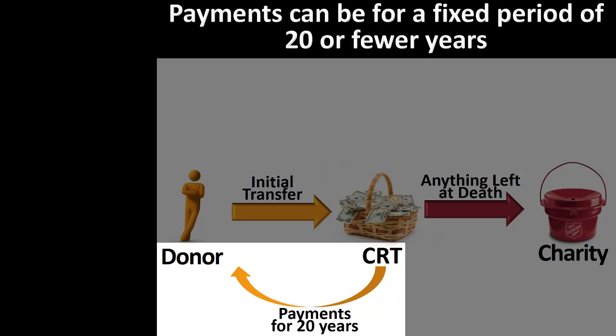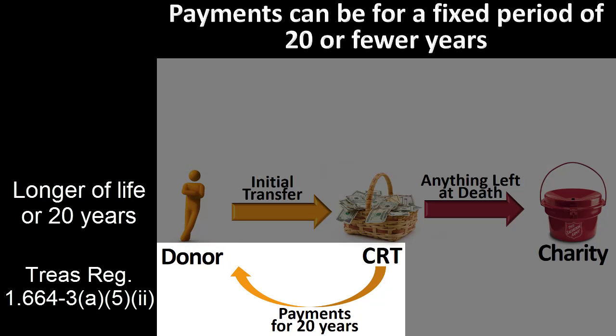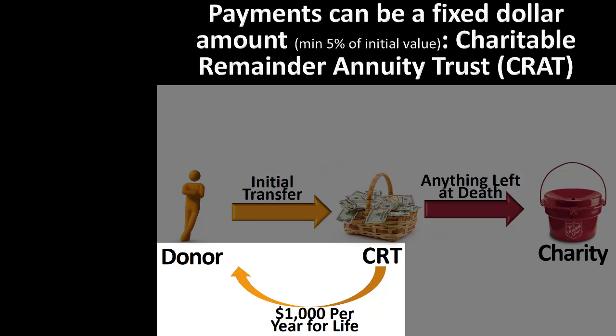Additionally, the terms can be combined. Thus, the payment could be made for the donor's life, or 20 years, whichever is longer, according to Treasury Regulation 1.664-3A5II. This option provides a lifetime annuity with a 20-year minimum payment regardless of actual lifespan of the measuring life.